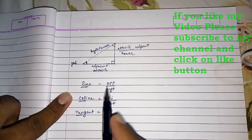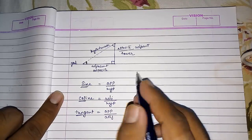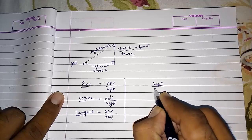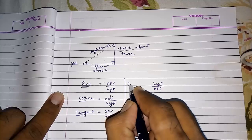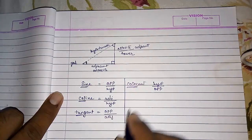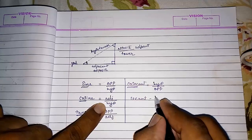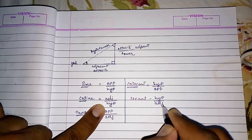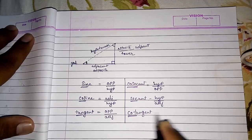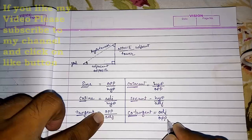Now we reverse the order of those three basic ratios. Hypotenuse divided by opposite is called cosecant, written as cosec. Hypotenuse divided by adjacent is called secant, written as sec. And adjacent divided by opposite is called cotangent, written as cot. So these are all six trigonometric ratios.